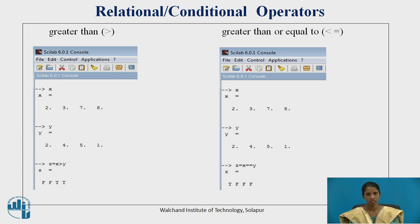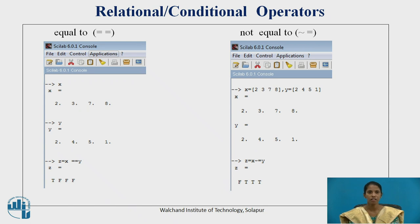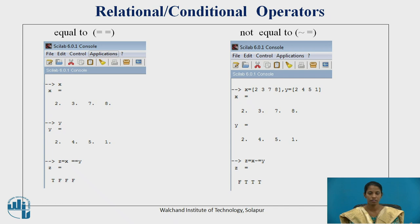For the greater than operator, with vectors x and y, the condition is x greater than y: 2 is greater than 2 — false, so F is given; 7 is greater than 5 — true. Similarly, greater than or equal to is performed. For the equal to operator, if both corresponding elements are equal the answer is true, otherwise false. For not equal to, 2 equals 2 is true but the answer is false because it is the complement of equal to.